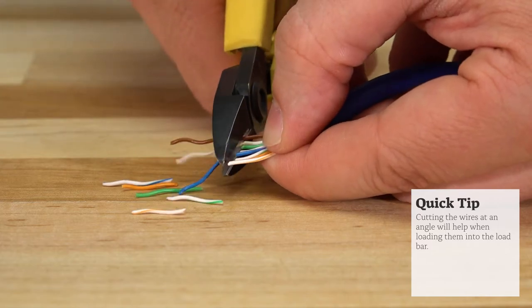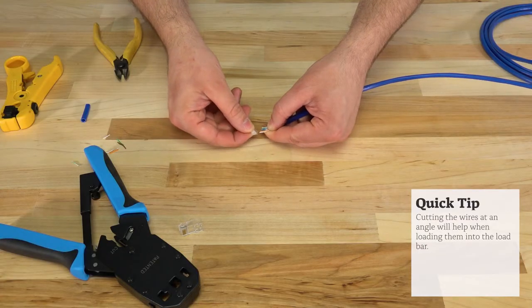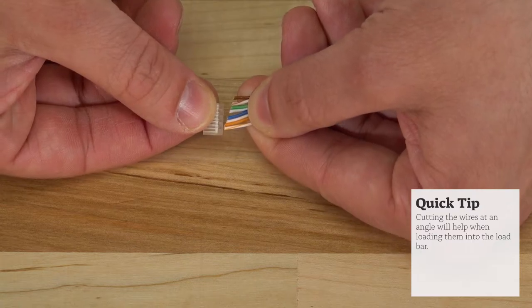we'll trim about one quarter inch from the wires at about a 20 degree angle. Cutting the wires at an angle will help when inserting them into the load bar.